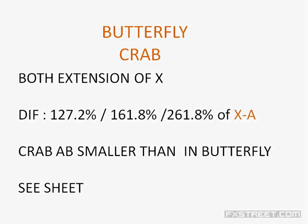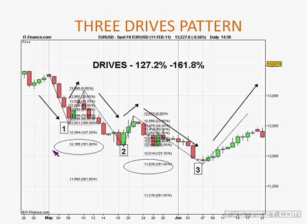The difference between a butterfly and a crab is just with regards to how far they extend — the crab's AB is smaller than the butterfly. Three drives pattern — again 161.8% for the driving pattern. Basically this is wave one driving down to wave three — you can see the patterns developing there.